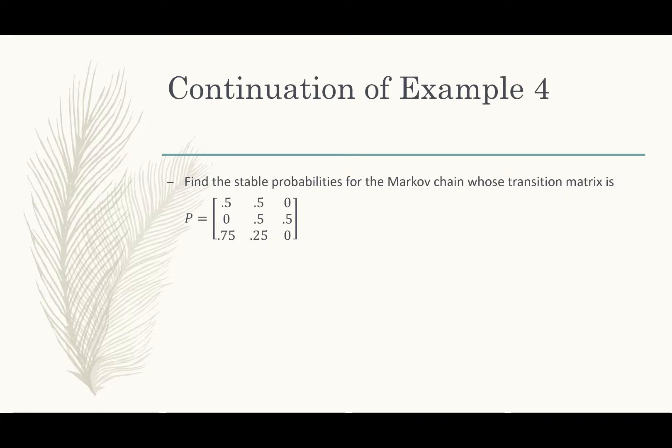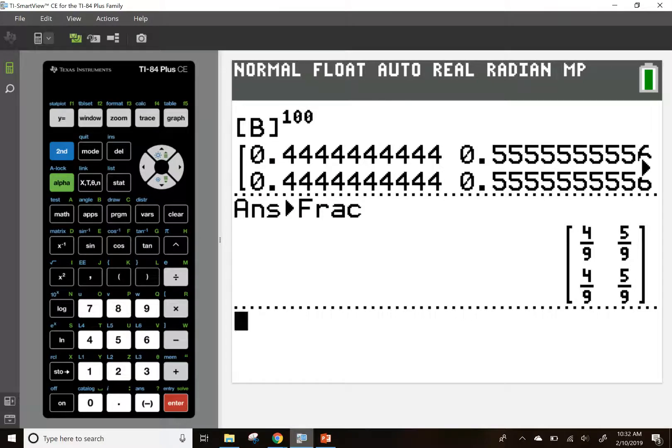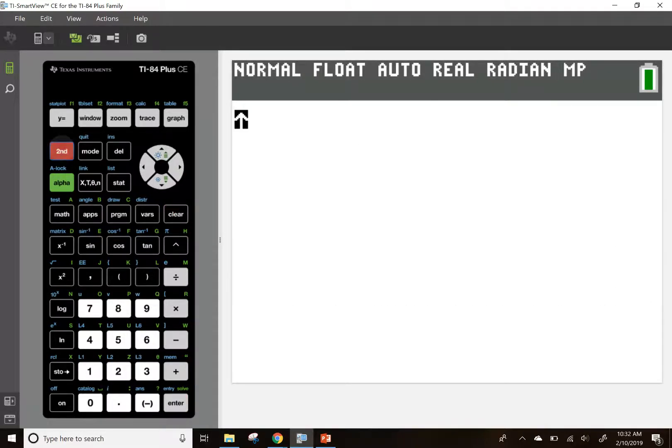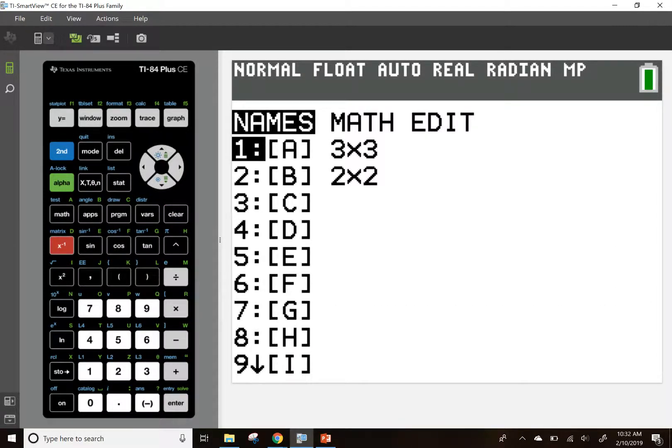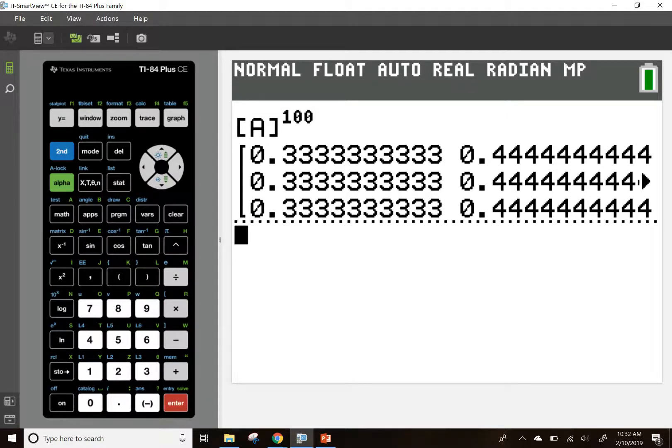We're going to do this as well for this example, which we already saw this matrix earlier, which is kind of nice. I believe it's already in my calculator as well. So, if I just go to my matrix, I've already typed this in as matrix A. And let's raise it to, let's say, the 100th power as well and see if they're all the same.